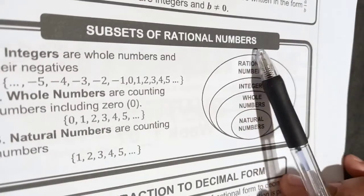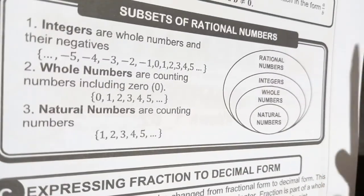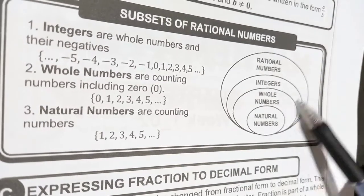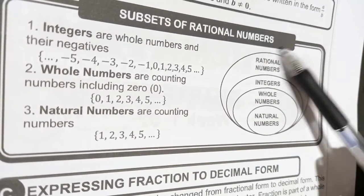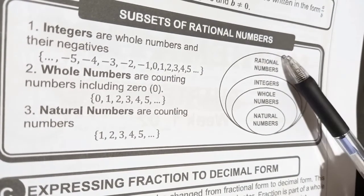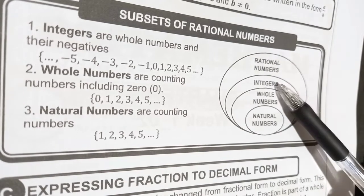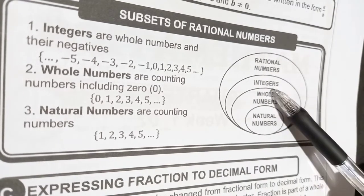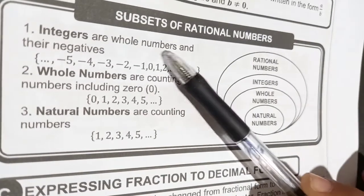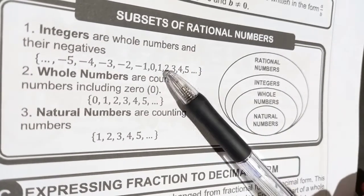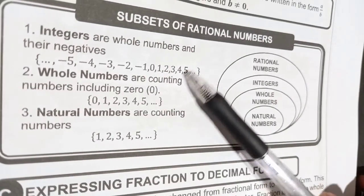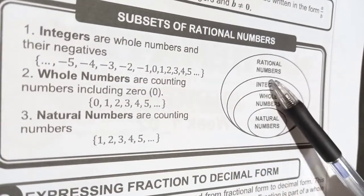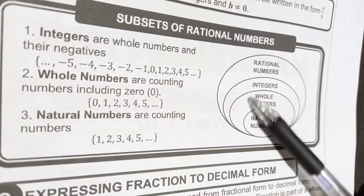Subsets of rational numbers. Numbers are categorized wherein from a bigger scope, it's the rational numbers, getting into integers. Examples of integers are whole numbers and their negatives. So you have positive numbers together with negative numbers — these are integers.